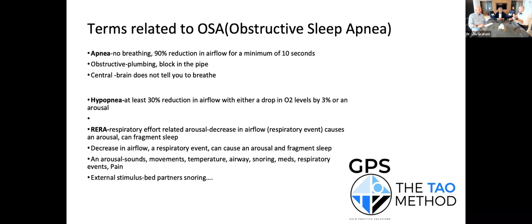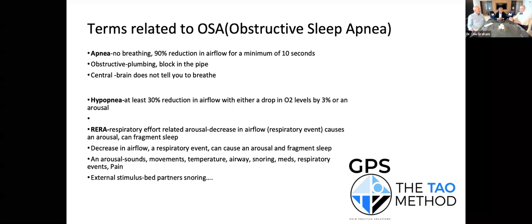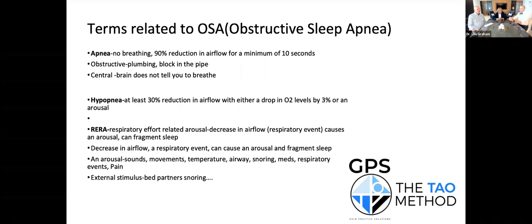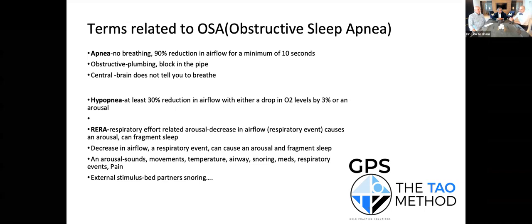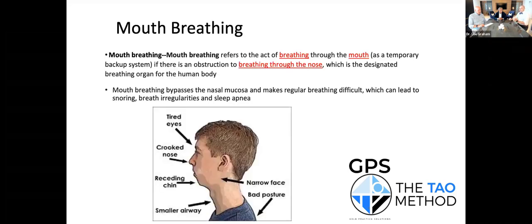Terms related to sleep apnea — the vernacular physicians use: apnea is really no breathing, a 90% reduction in airflow. We talk about obstructive apnea where it's crowding of the airway, and central apnea where the brain isn't telling you to breathe. Hypopnea is a 30% reduction in airflow with a 3% reduction in oxygen saturation. Michael loves Rees' upper airway resistance syndrome — these are the thin women. It's really about a crowded airway.